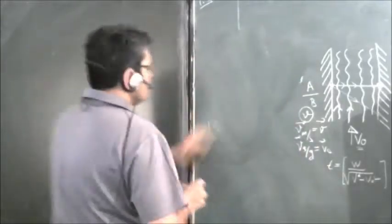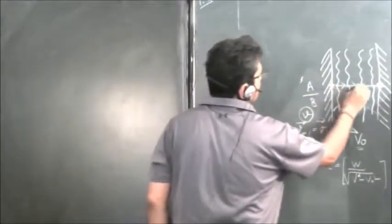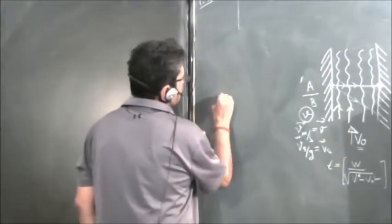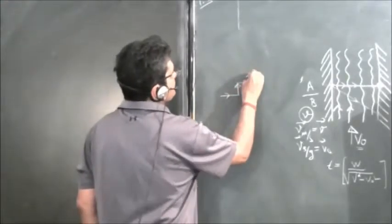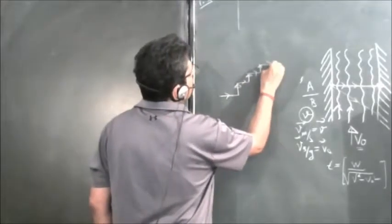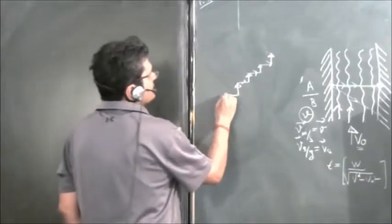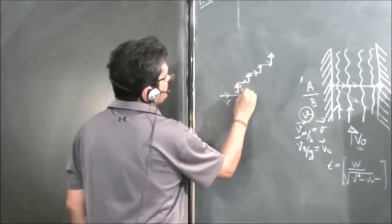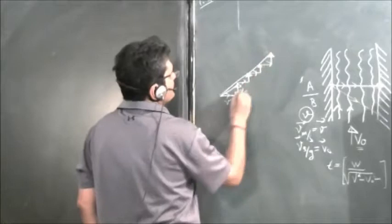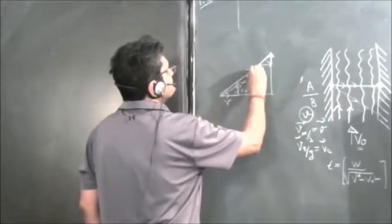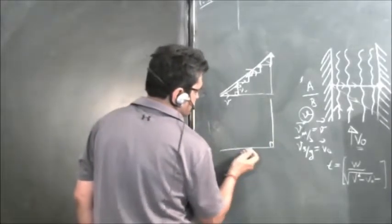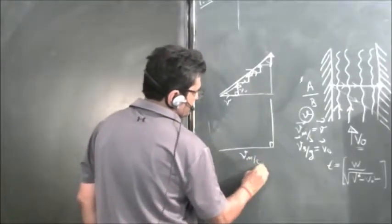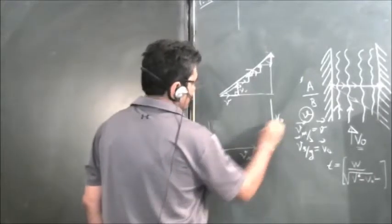Now for the second swimmer — he swims perpendicular to the stream. The stream is moving sideways, so even though he swims perpendicular, he gets drifted. Drawing the vector triangle: this is 90 degrees. His velocity relative to stream is V perpendicular, stream velocity is V₀, and the resultant is his velocity with respect to ground.